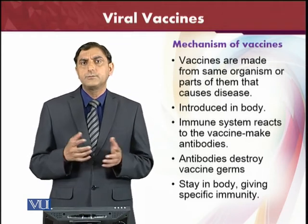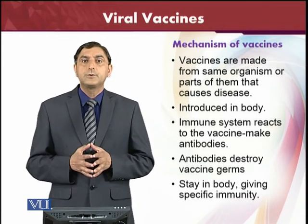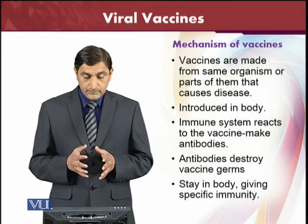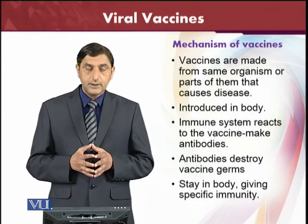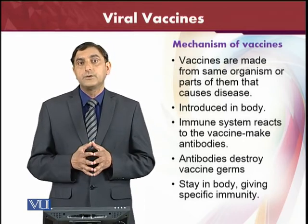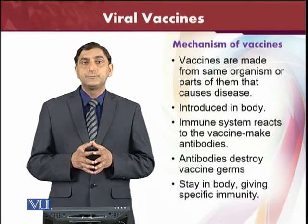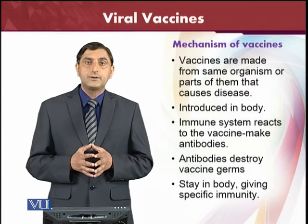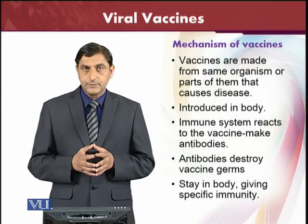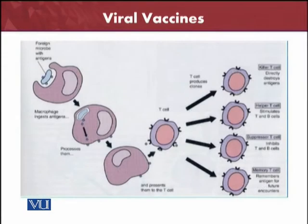The vaccine germs will be very weak, so antibodies will quite rapidly destroy them. The memory cells stay in the body, giving specific immunity because the memory cells will recognize that foreign body. They will know such a kind of foreign body, and if the foreign body comes naturally, they are capable of killing it quite easily.